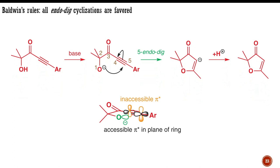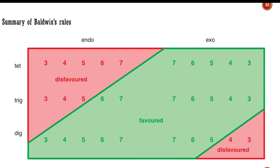The important thing with endo-digonal cyclizations, though, is that the alkyne has two antibonding pi orbitals, one of which must always lie in the plane of the new ring, making it much easier for the nucleophile to get at. Baldwin's rules work because they are based on whether orbital overlap can be readily achieved in the conformation required at the transition state.